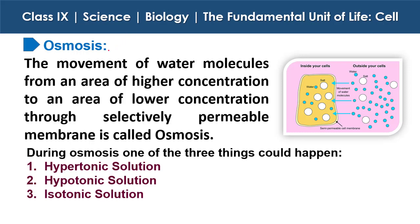Next is osmosis. The movement of water molecules from an area of higher concentration to an area of lower concentration through a selectively permeable membrane is called osmosis. The molecules of water outside the cell are high while inside the cell they are low, so the molecules move inside the cell through the plasma membrane. This process is osmosis.